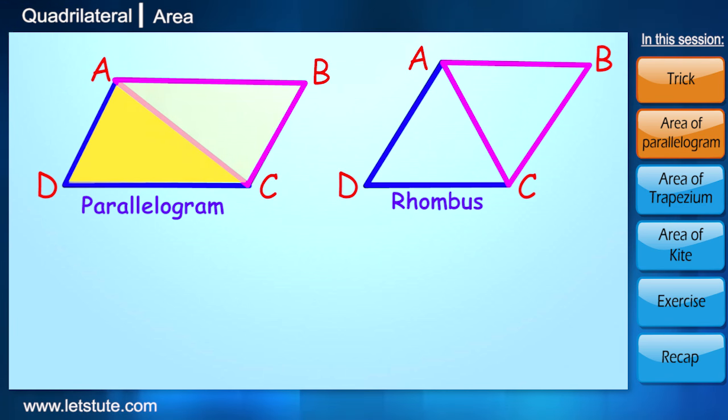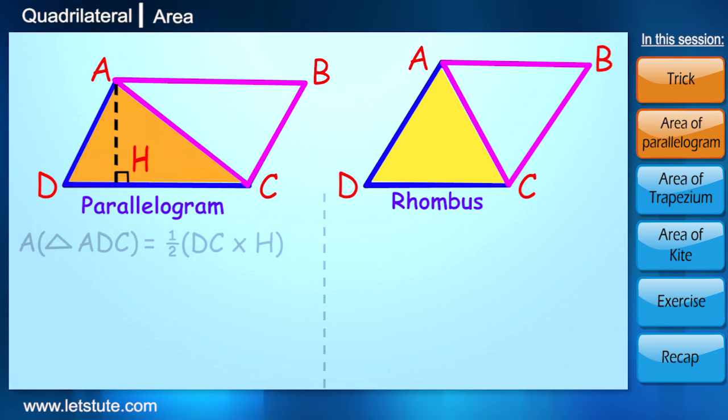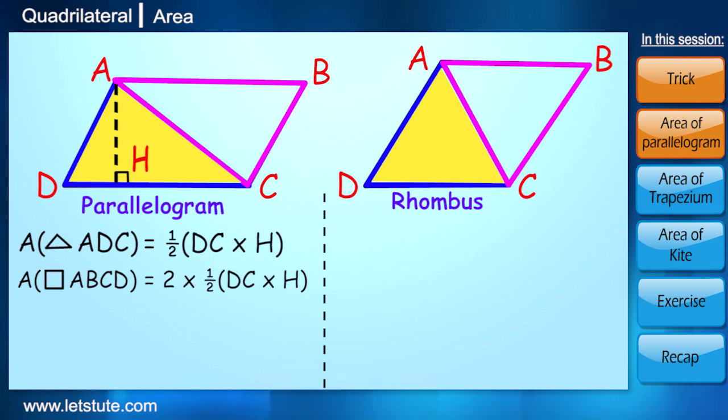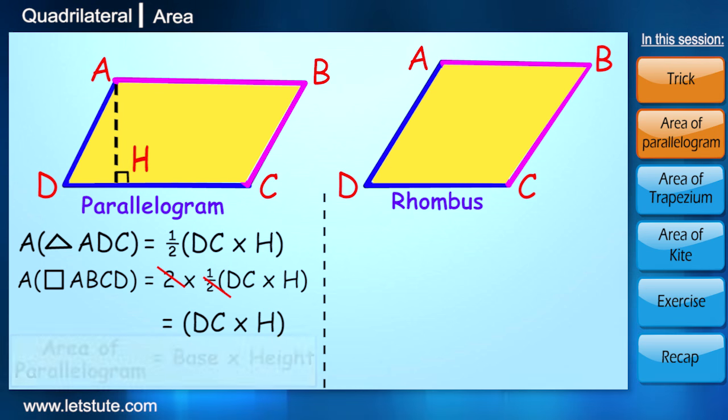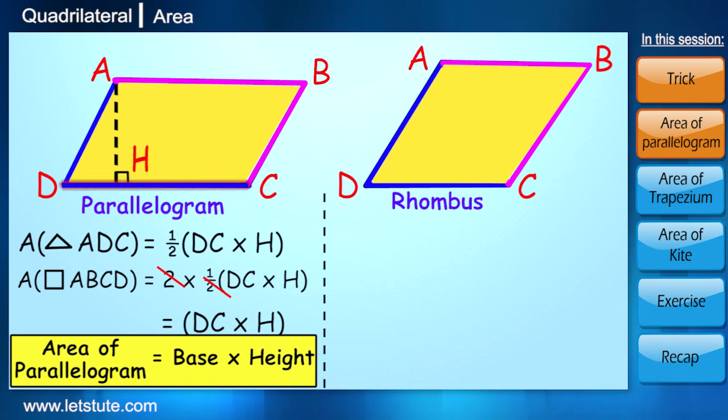Now you tell me, what is the area of triangle ADC? For that we need height. So let's consider h is perpendicular height, so that area of triangle ADC is half times DC into h, where DC is the base. Now double it up to get the area of parallelogram. So after doubling we get DC into h. In general we can say area of parallelogram is base into height.